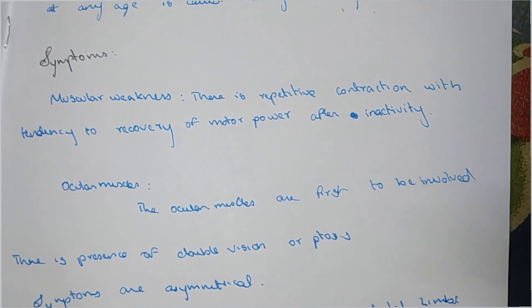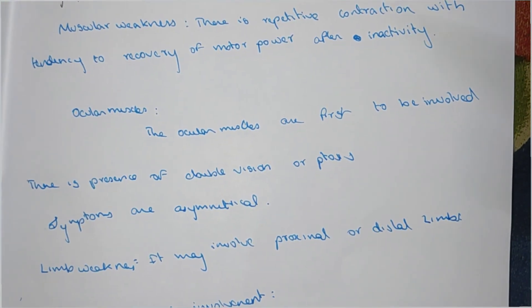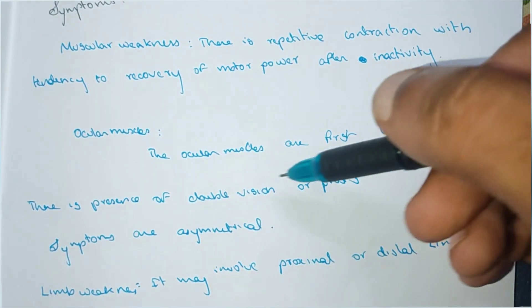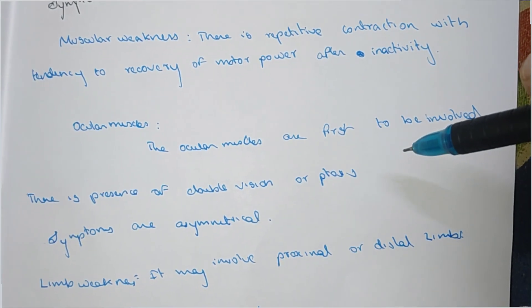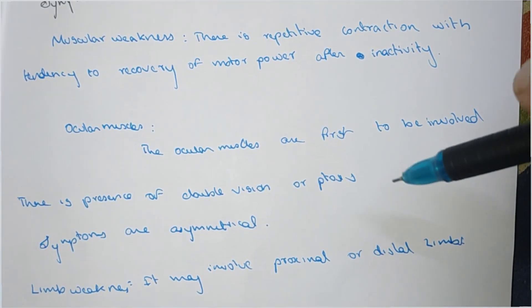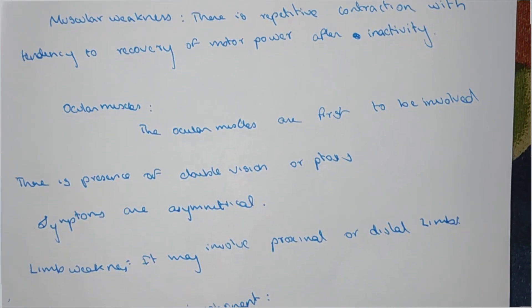The ocular muscles are the first to be involved. There is presence of double vision known as diplopia or double vision, which is the first sign when ocular muscles are involved.